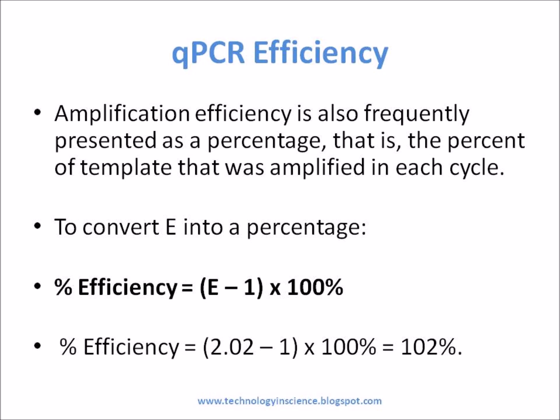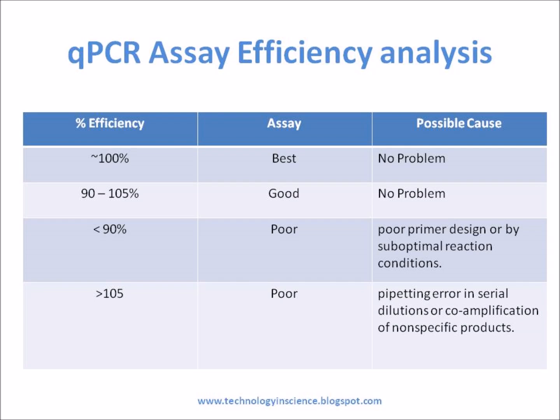Low reaction efficiencies less than 90% may be caused by poor primer design or by suboptimal reaction conditions. Reaction efficiencies greater than 100% may indicate pipetting error in serial dilutions or co-amplification of nonspecific products, such as primer dimers.